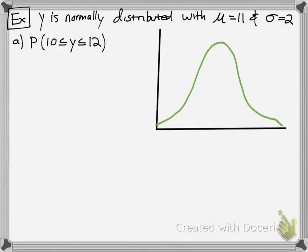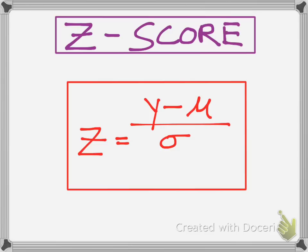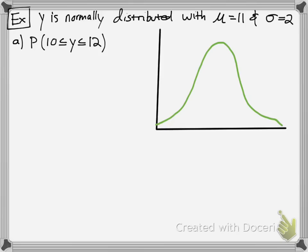Here's an example. So, y is normally distributed with a mu or a mean of 11 and a standard deviation of 2. Notice how this is a y here, and we're going to try to convert it to the standard normal, which involves a z. So we use that z-score formula here.